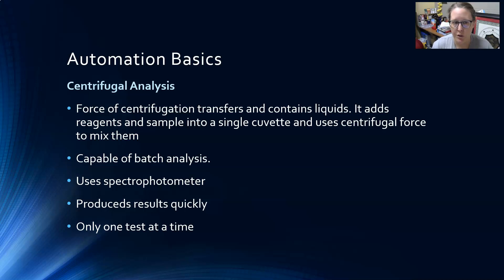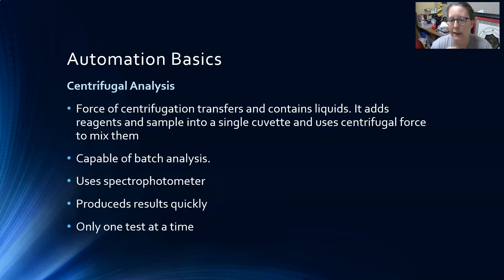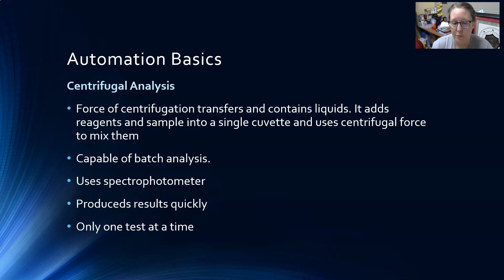In centrifugal analysis, centrifugal force transfers and mixes liquids — reagents and samples are added into a single unit and centrifugal force mixes them. A good recent example used in smaller labs is the Abbott Piccolo, which uses a small rotor cartridge. You place the sample in the middle, and centrifugal force separates the plasma and distributes it into reagent chambers where the reactions occur. It is capable of batch analysis — you load your sample and select a panel, and that's the only thing that runs at that time. It uses a spectrophotometer to read reactions and produces results quickly, but only runs one panel per cartridge at a time.